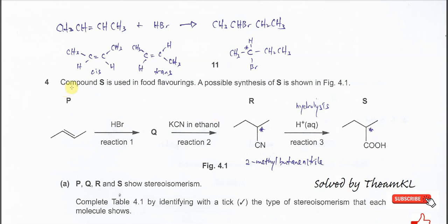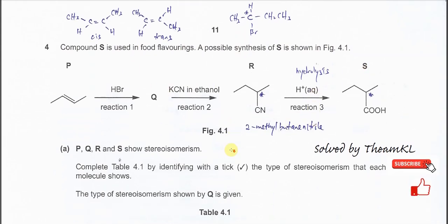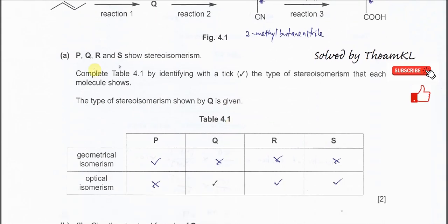Question 4: Compound S is used in food flavorings. A possible synthesis is shown, going from P through to compound S. Part A — P, Q, R, and S show stereo isomerism. You should know that there are two types of stereo isomerism: geometrical and optical isomerism. Complete table 4.1 by identifying the type of stereo isomerism each molecule shows. First, you need to know what P, Q, R, and S are.